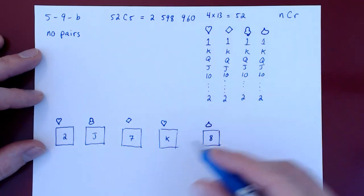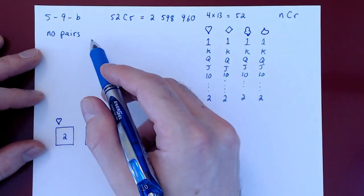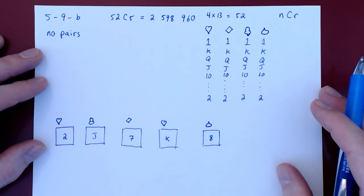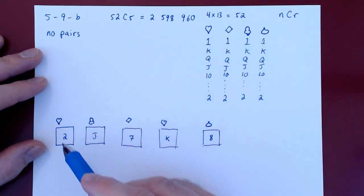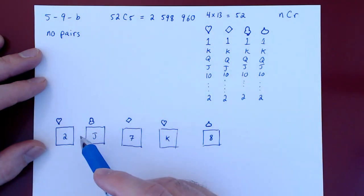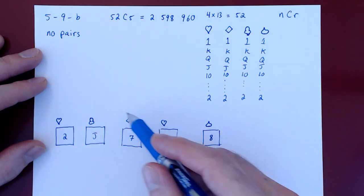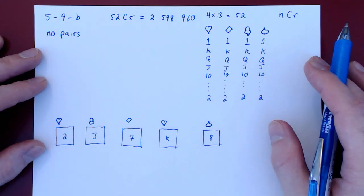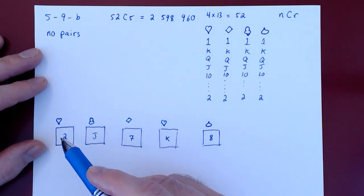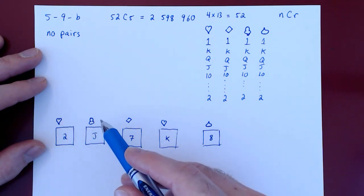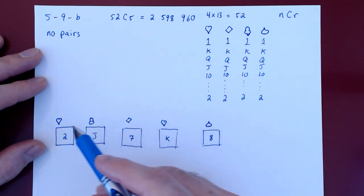So here's one hand that contains no pairs or anything stronger. Well, let's go from this example to counting all such possible hands. Let's extract from the specific example the general setup. What was our first choice? We chose initially the kind, and then we chose the suit.